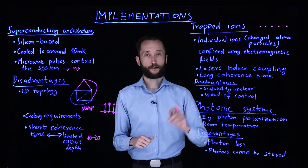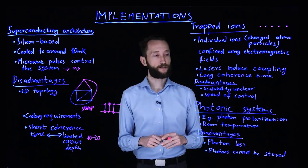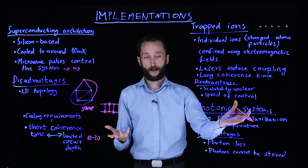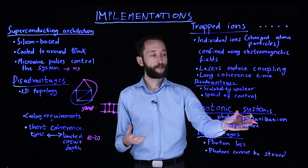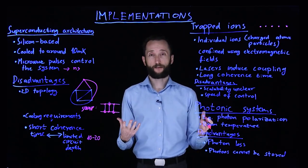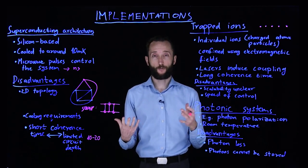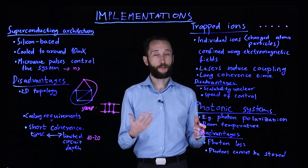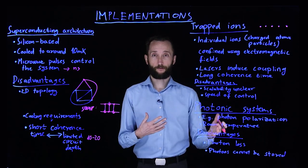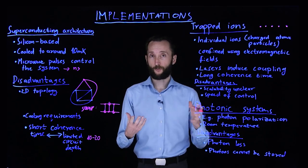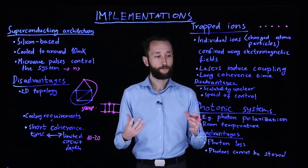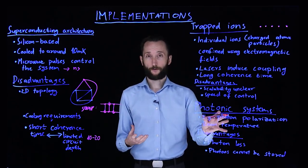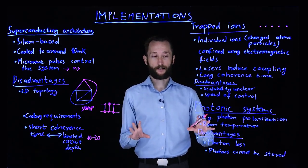Then we have photonic systems, which are based on light. You can take, for instance, the polarization of light as qubit states — it would be left polarized, right polarized, and the superposition in between. And they operate at room temperature, which is fantastic.